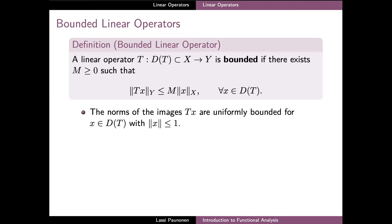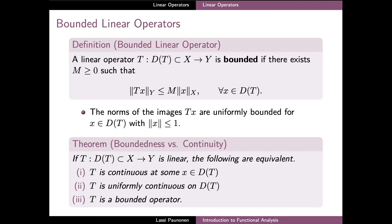Because of the scaling properties of the norm, boundedness can alternatively be defined as the property that the norms of Tx must be uniformly bounded for all x with norms at most one. The boundedness of an operator is a genuine property of the operator, meaning that not all linear operators are necessarily bounded. However, as the theorem stated here shows, this map T is continuous at some point x of the domain D(T) if and only if it is continuous, and indeed even uniformly continuous, on all of the domain D(T), and both of these properties are equivalent to the operator T being bounded.